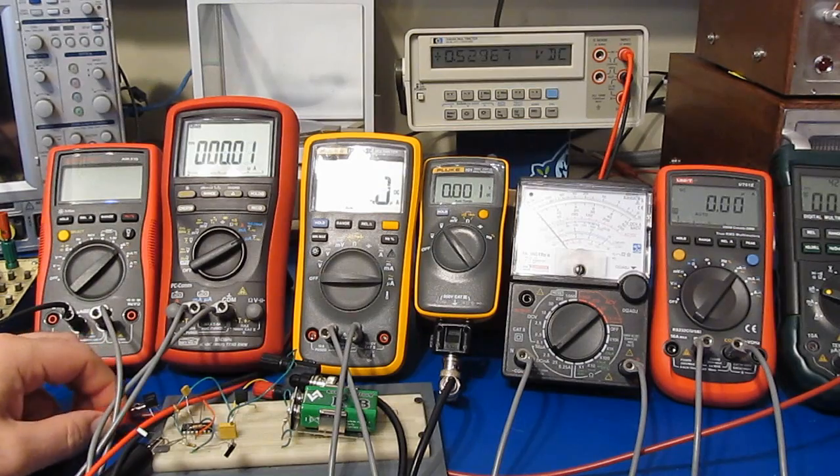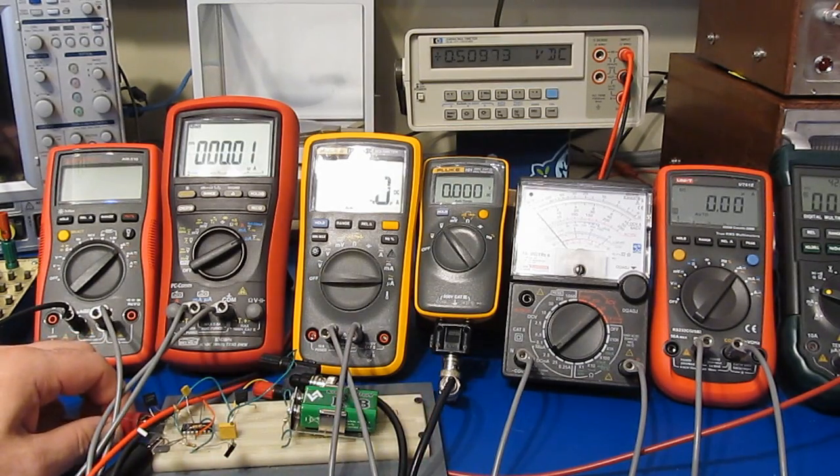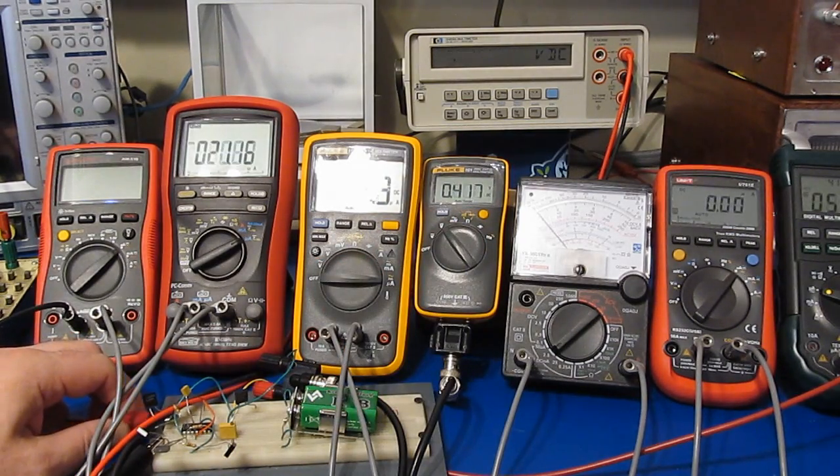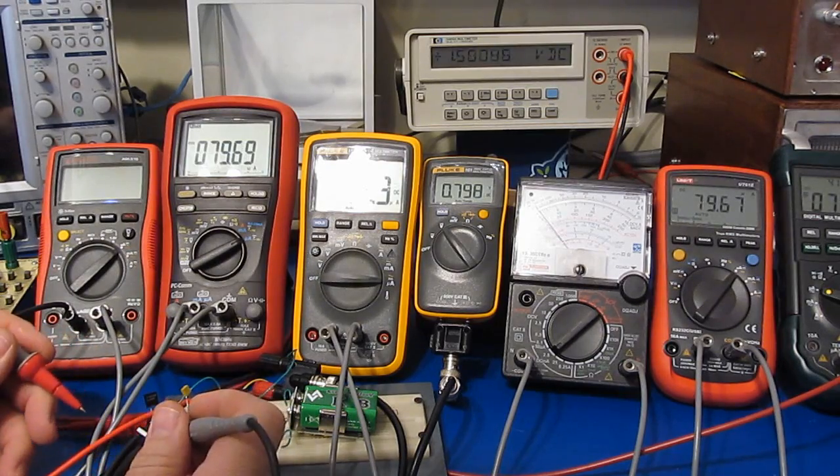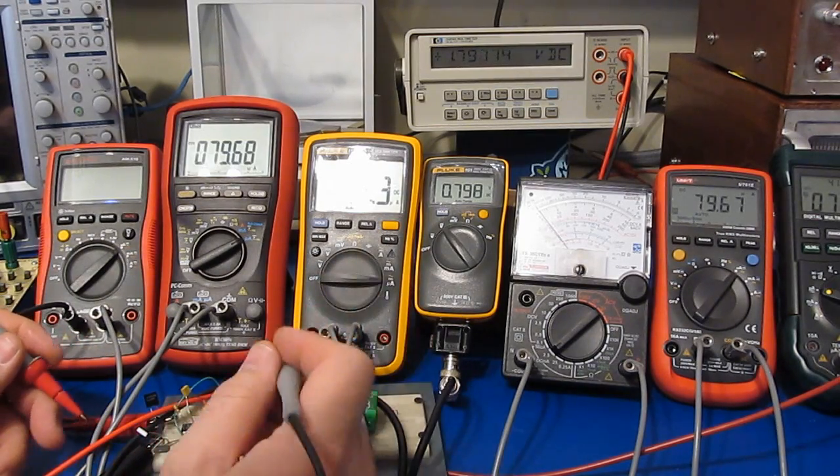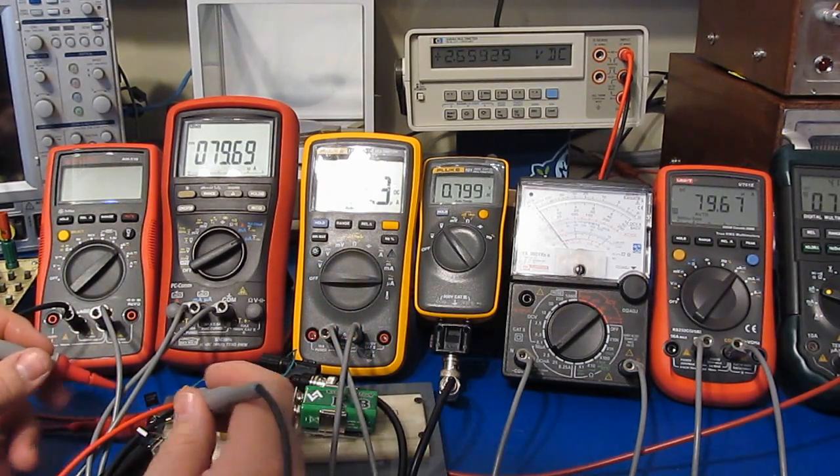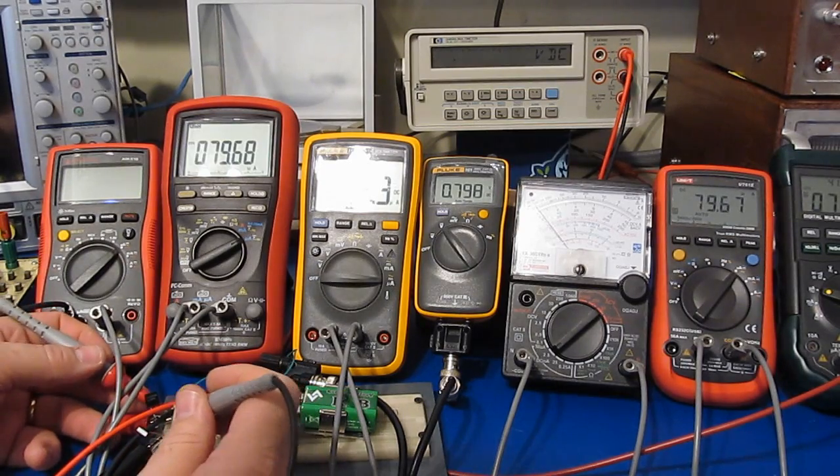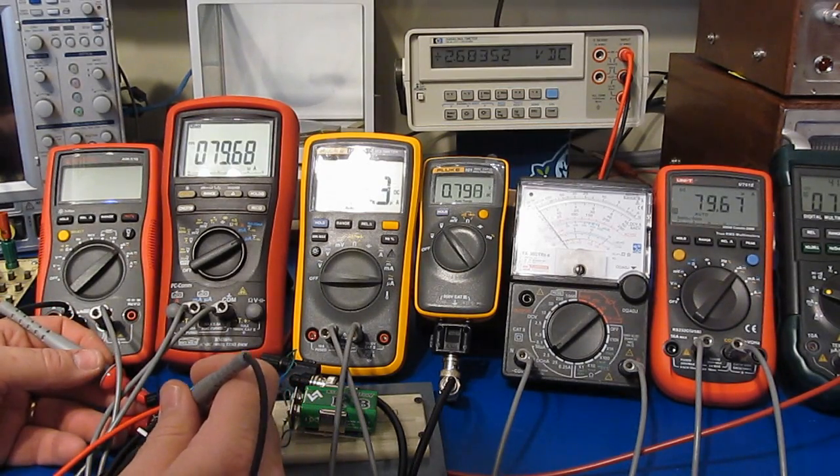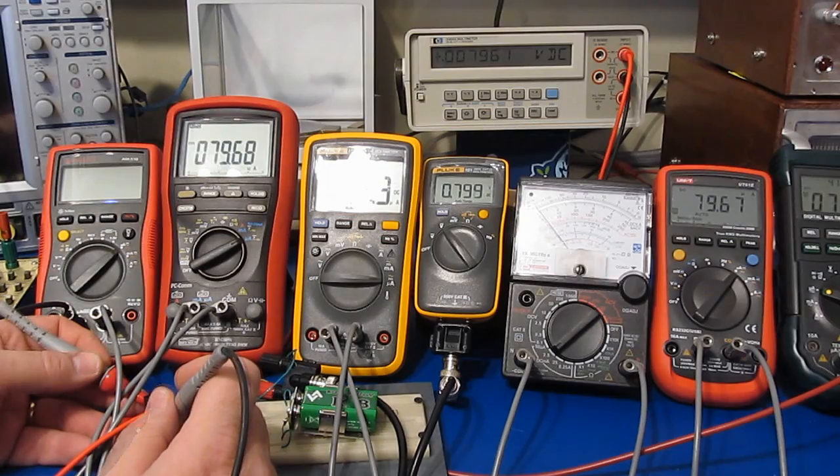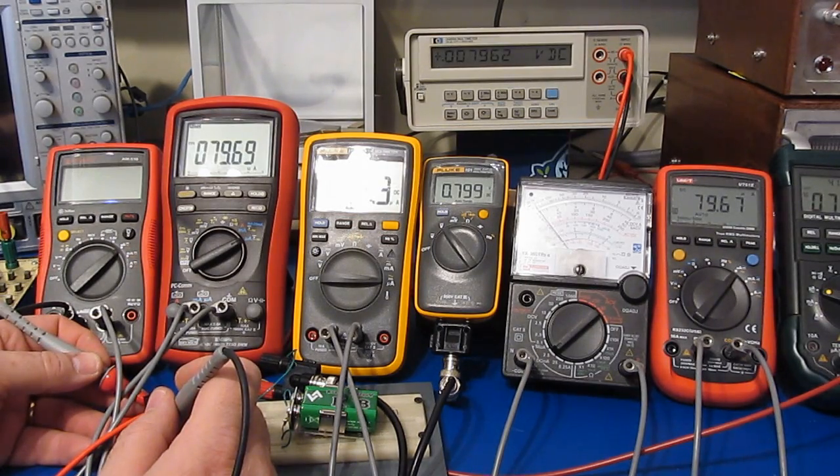You can see I have our little powered shunt attached. And if I disconnect it. See the Fluke 101 now reads zero. If I reattach it. You can see we're getting roughly 798 millivolts. This is a 100 ohm shunt. So if I look across this. You can see it's roughly 7.96 millivolts.